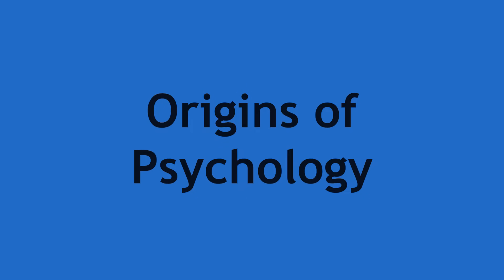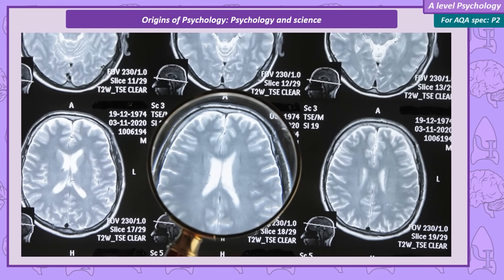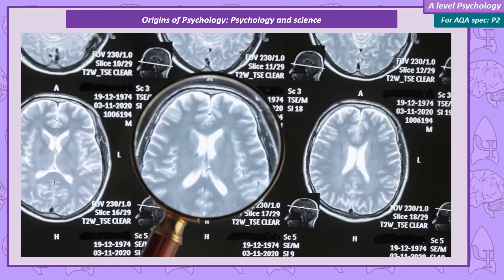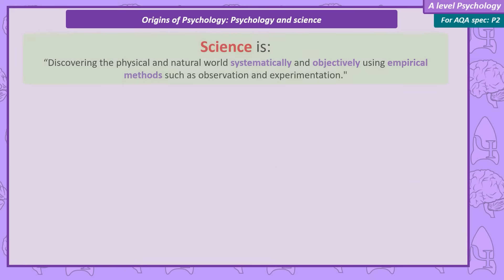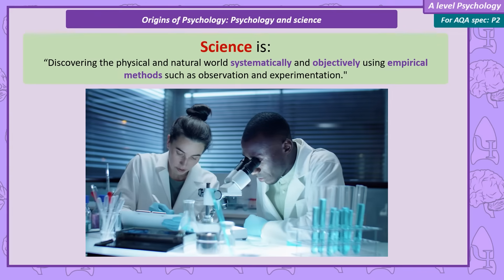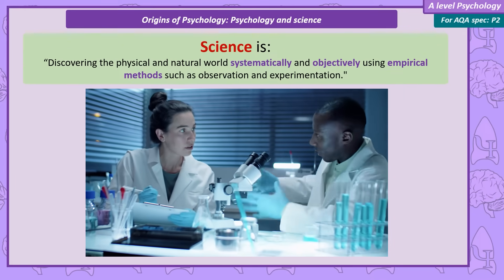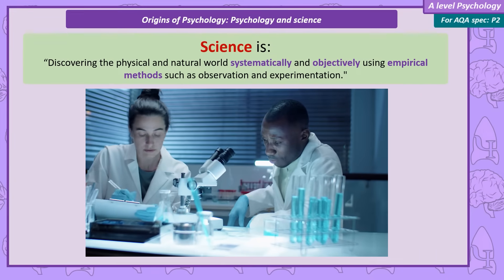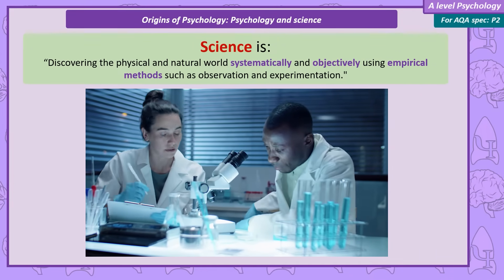Origins of Psychology. Since this video is about the start of psychology as a science, it would be a good idea to start by defining what it means to call psychology a science. Let's begin by actually defining science: finding out systematically and objectively about the physical and natural world using empirical methods such as observation and experimentation. There are a lot of complex words just in that definition, so let's break them down.